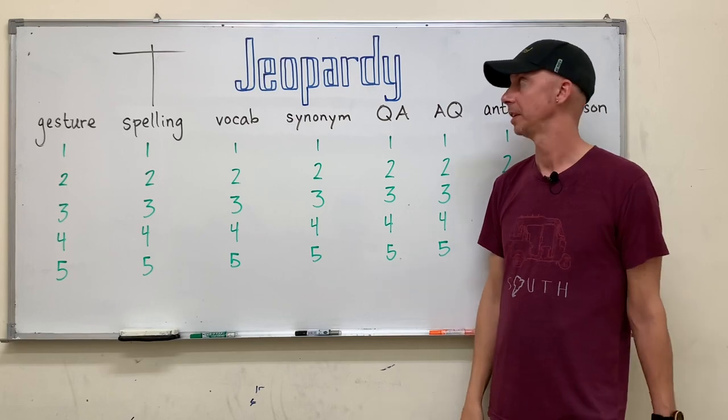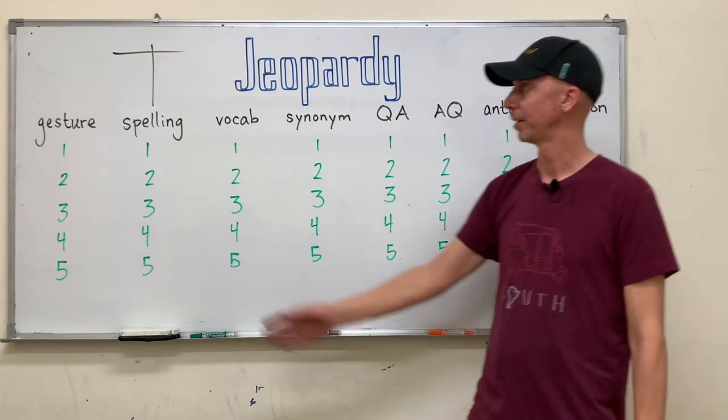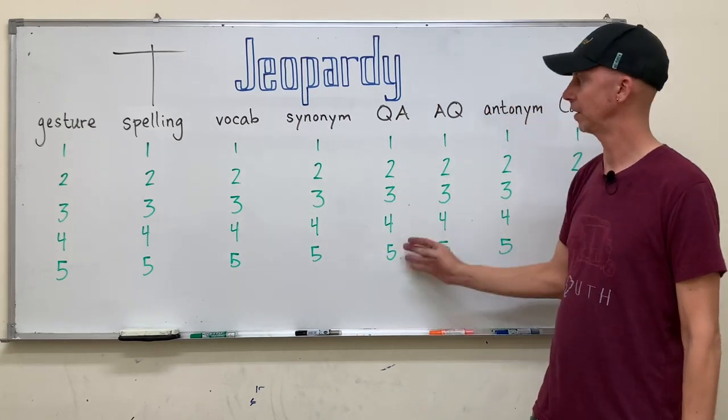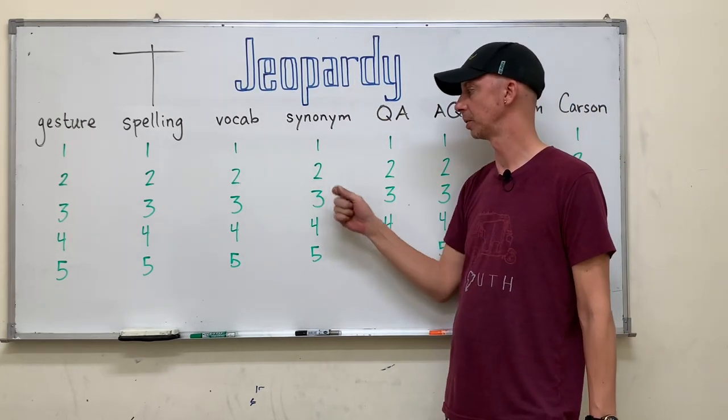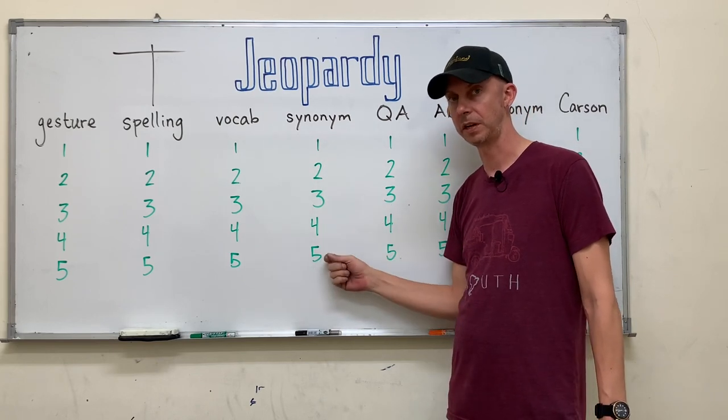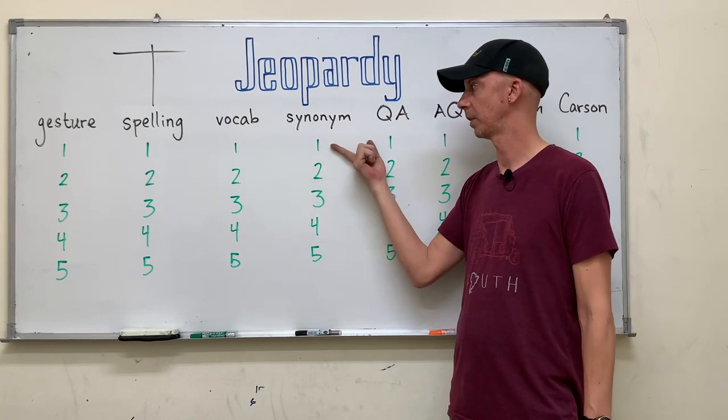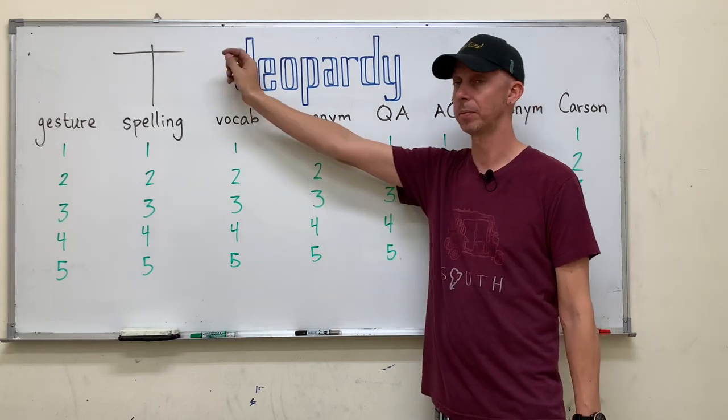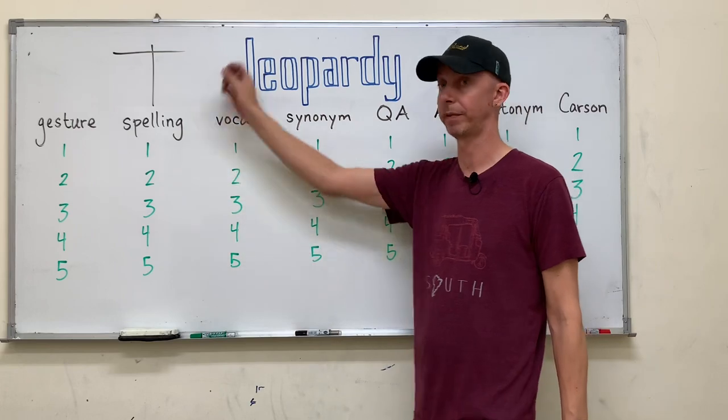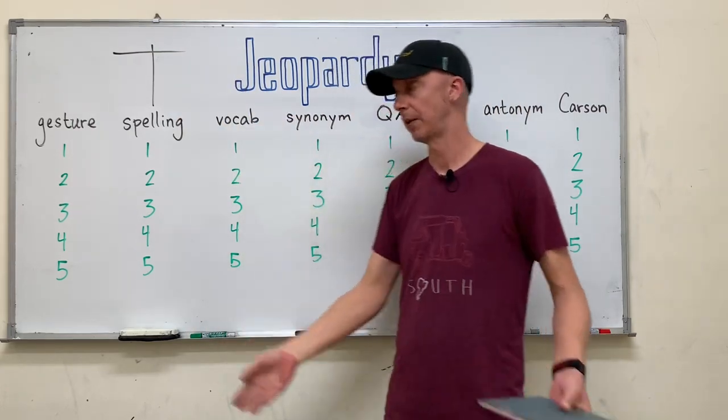Jeopardy, if you're not familiar with it, is an American game show where there are categories of questions, and within each category there are multiple questions that increase not only in value but also in difficulty. So the question at level one would be worth one point, but it would be easier than the level five question for five points. That's how it works.